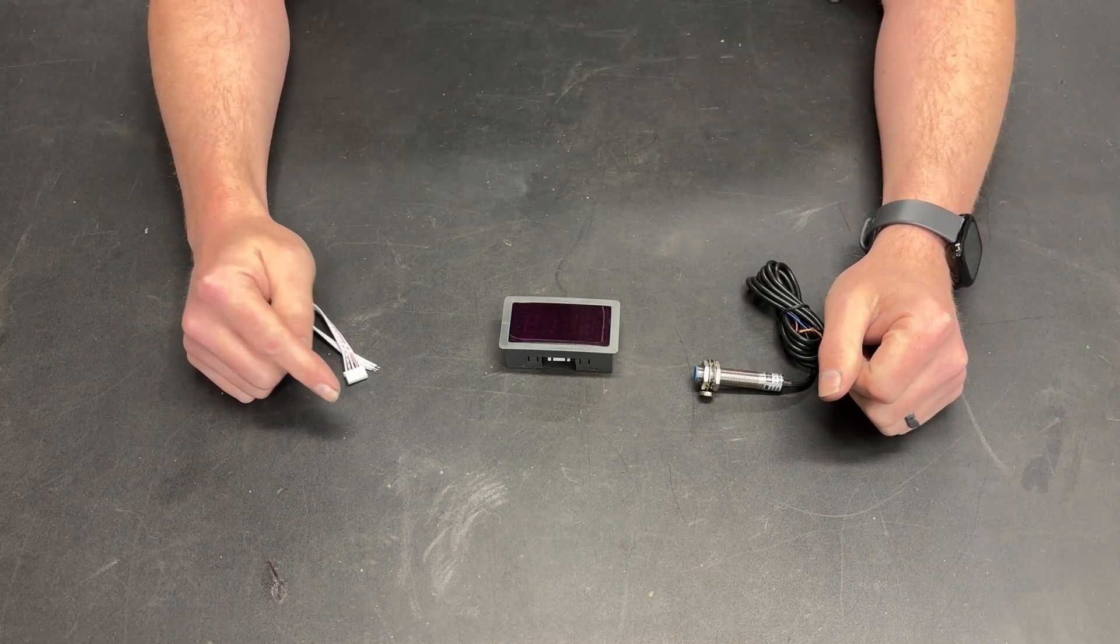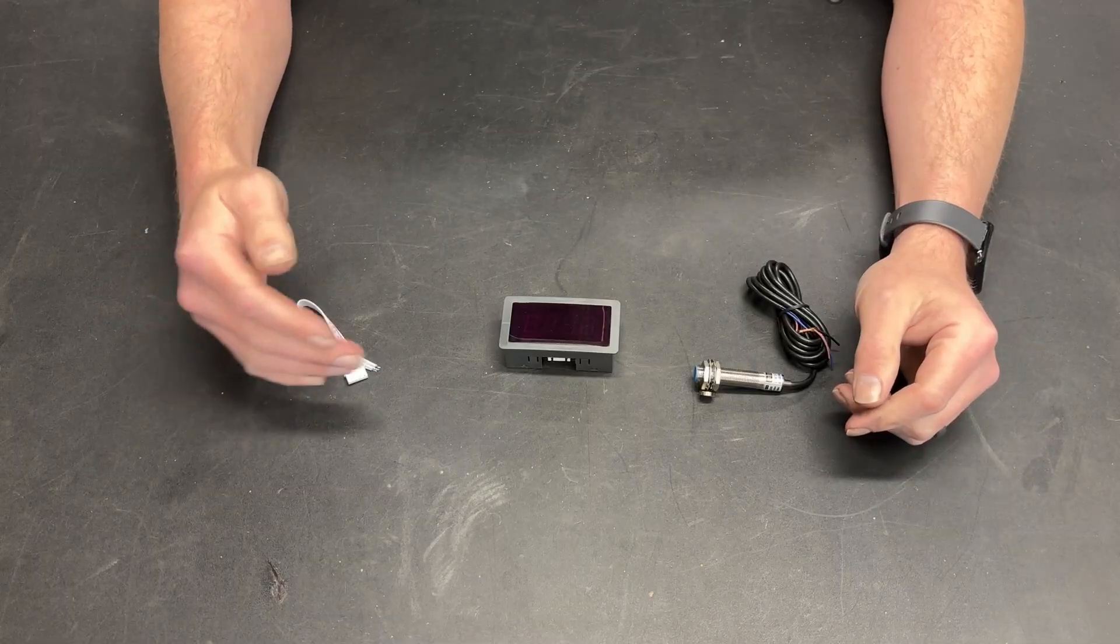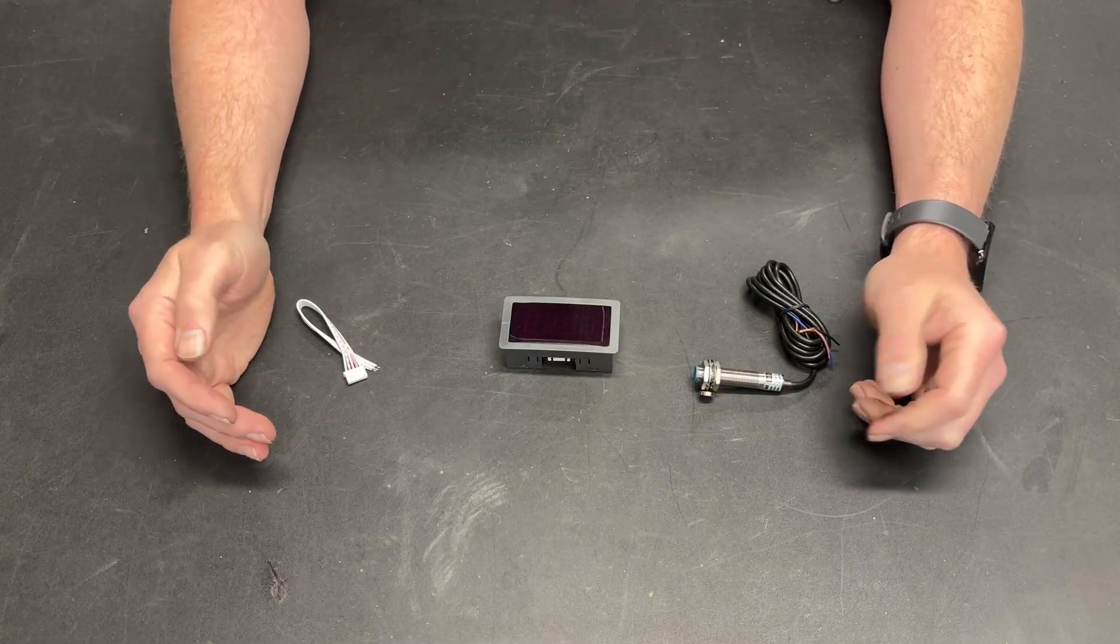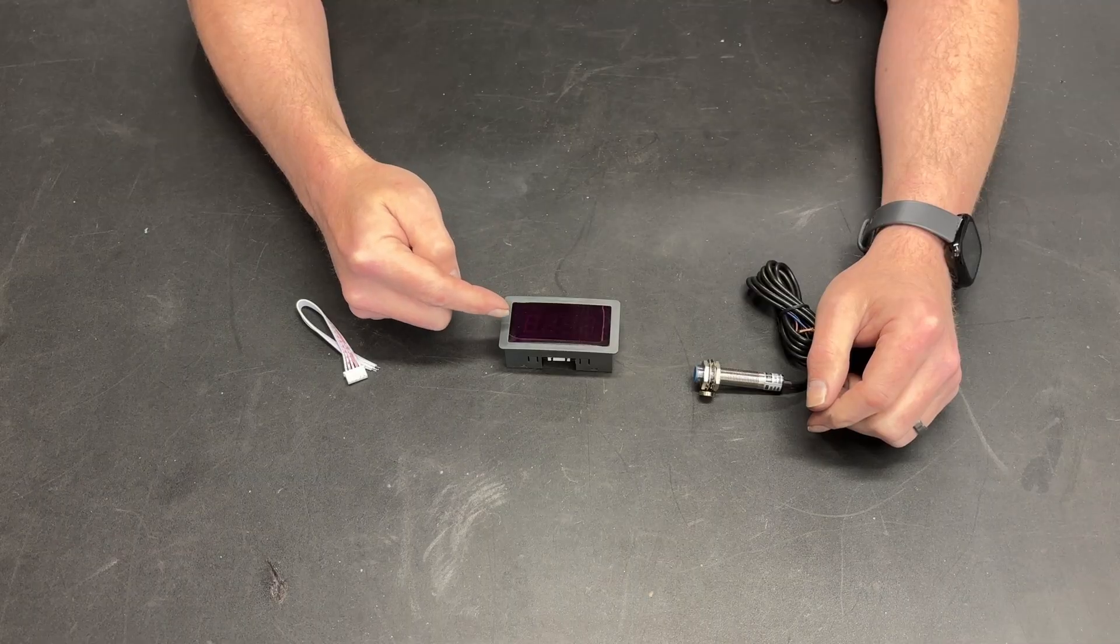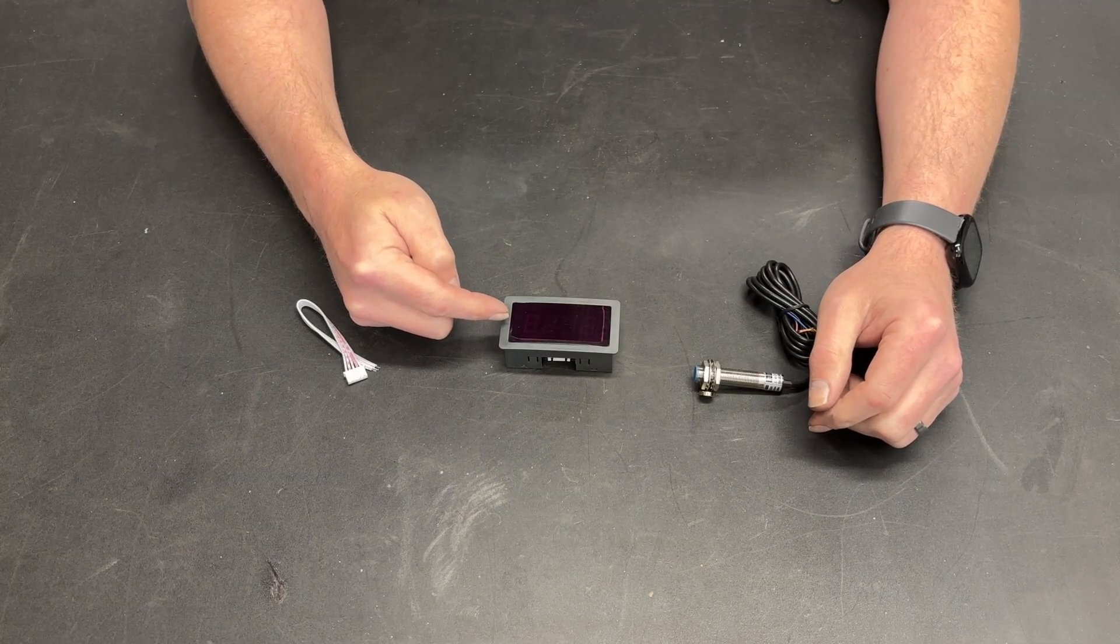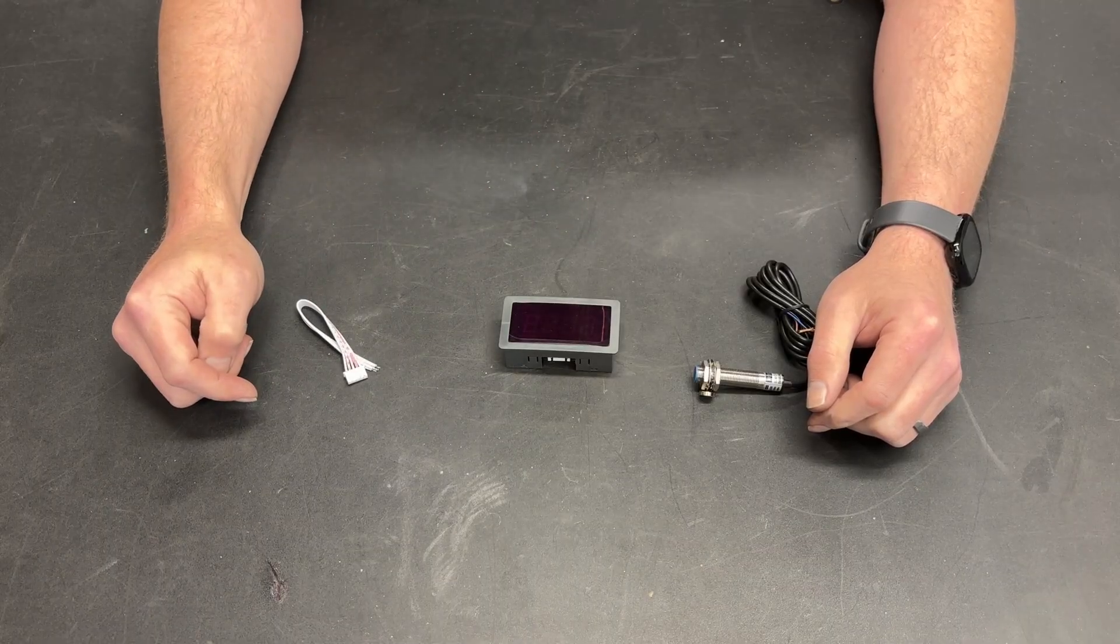So you've hooked up a treadmill motor to your mill, lathe, bandsaw, drill press, or any number of other shop tools. And now you want to have some sort of digital readout that shows you how fast it's spinning. Let's go over some of the ins and outs of hooking up a unit like this.